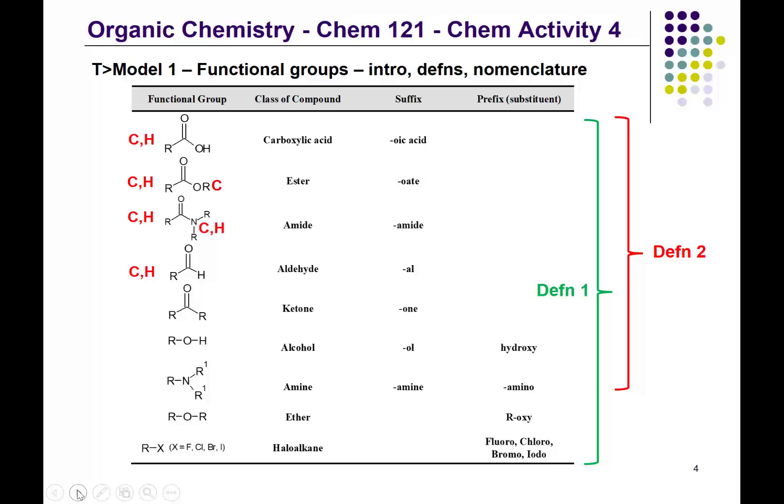For the amide, those R groups could either be a carbon or a hydrogen. An amide is defined as having C double bond O and N; as long as you have that, what's attached to the N can be either a carbon or a hydrogen. For the aldehyde, there has to be at least one hydrogen attached to that C double bond O. But for a ketone, both R groups have to be carbons — if any one of those R groups were a hydrogen, you would have an aldehyde.